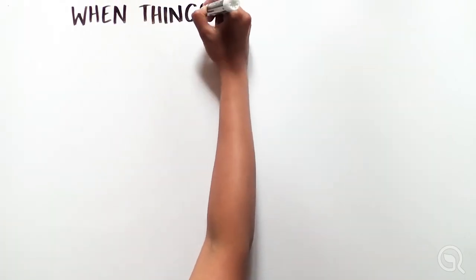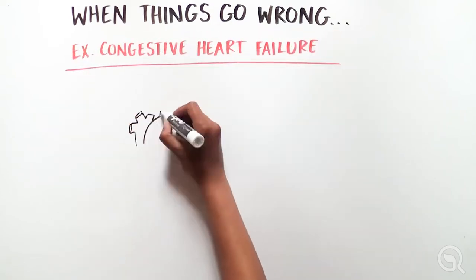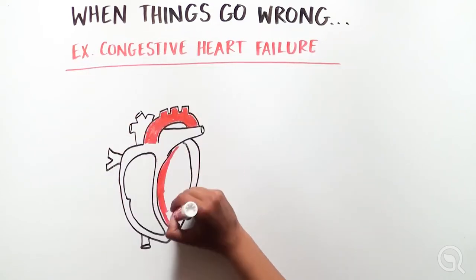But sometimes feedback loops don't work properly and cause health problems. Congestive heart failure, for example, occurs when a positive feedback loop goes awry.